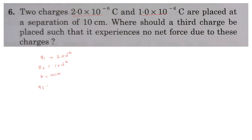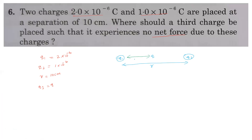We assume the third charge is q. We place q1 and q2 separated by distance r. The third charge is placed at distance x from q1 and at distance r−x from q2. We need to find x such that the net force on the third charge is zero.